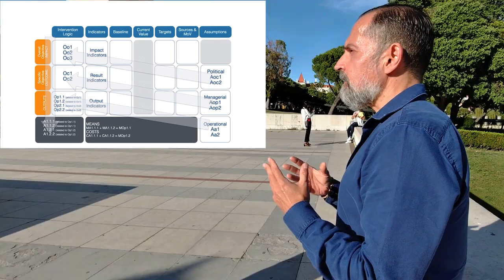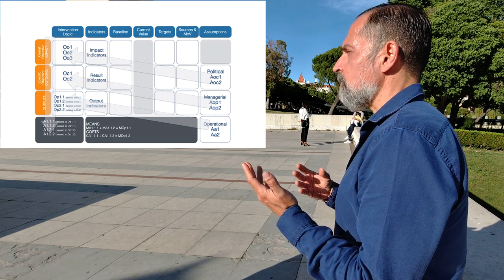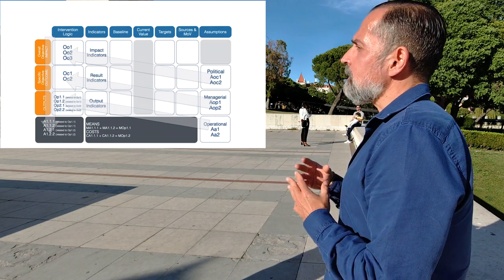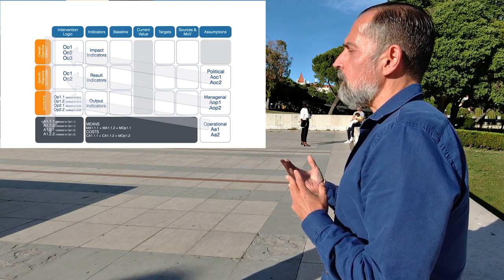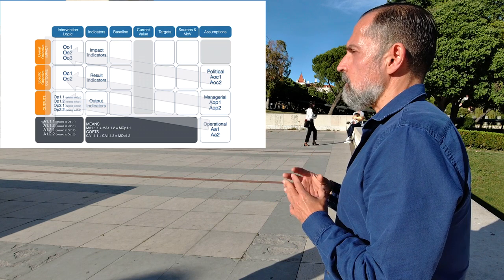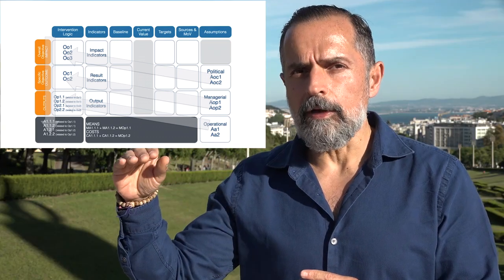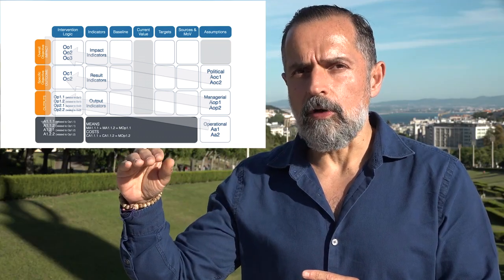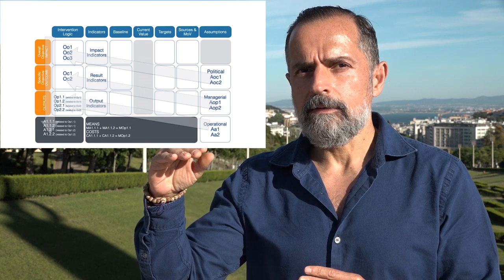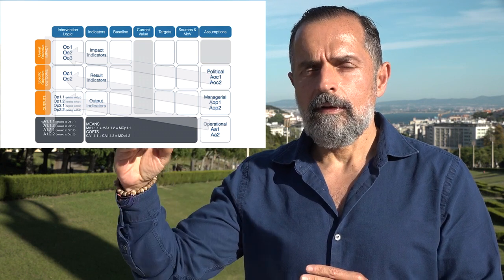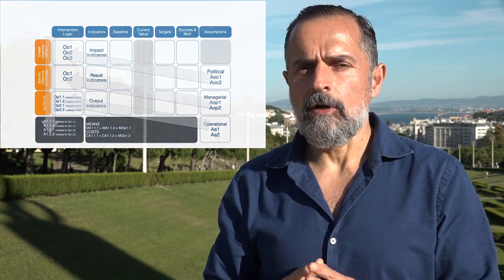The baseline is the value of the indicator before the project starts, and the target is the expected value of the indicator after the project is completed. All these elements are part of your horizontal logic: indicator, baseline, target, and source of verification.